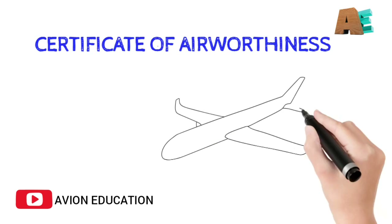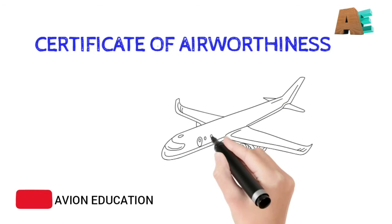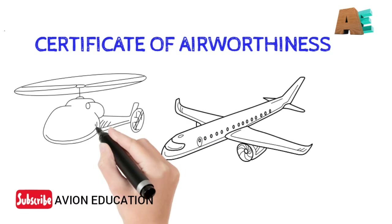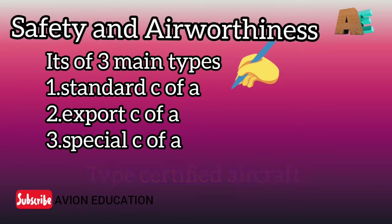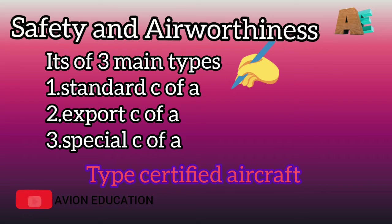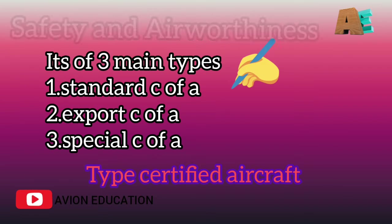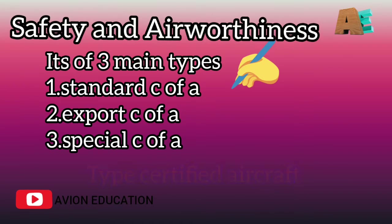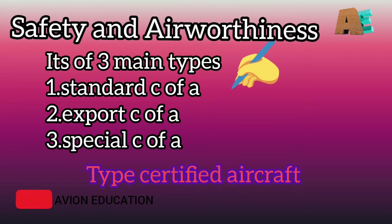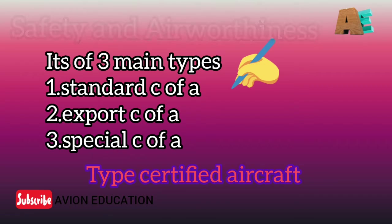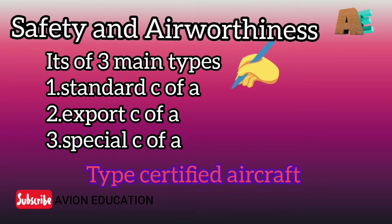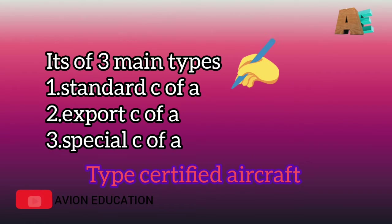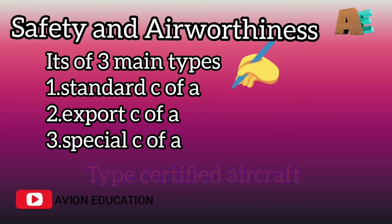First is Certificate of Airworthiness, that is C of A. It is issued for the safety and airworthiness of an aircraft. It is of three main types: Standard C of A, Export C of A, and Special C of A. Standard C of A is given for those aircrafts with a type certificate. Export C of A is given by the export airworthiness authority.